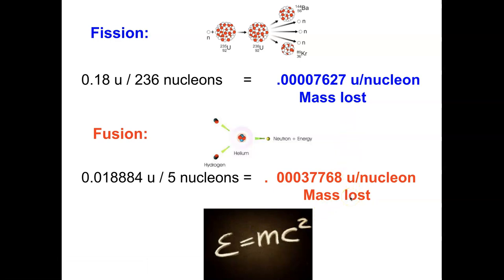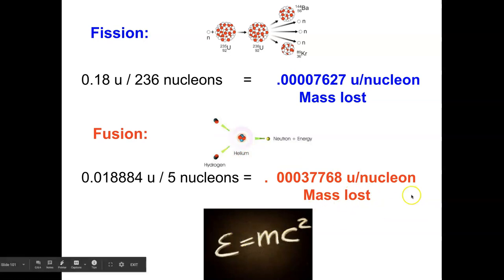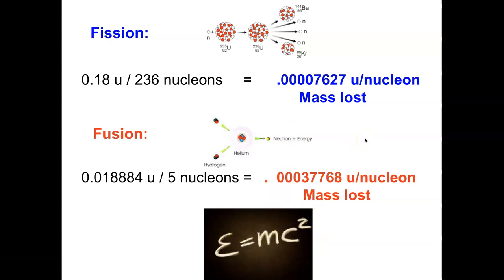Because there is more mass missing per nucleon in nuclear fusion — the two light nuclei coming together — there is going to be more energy released. That's the key point: nuclear fusion has a greater mass defect per nucleon, which leads to a greater amount of energy being released. That's why we want to move toward fusion — more energy, tremendous fuel supply, and no radioactive waste.